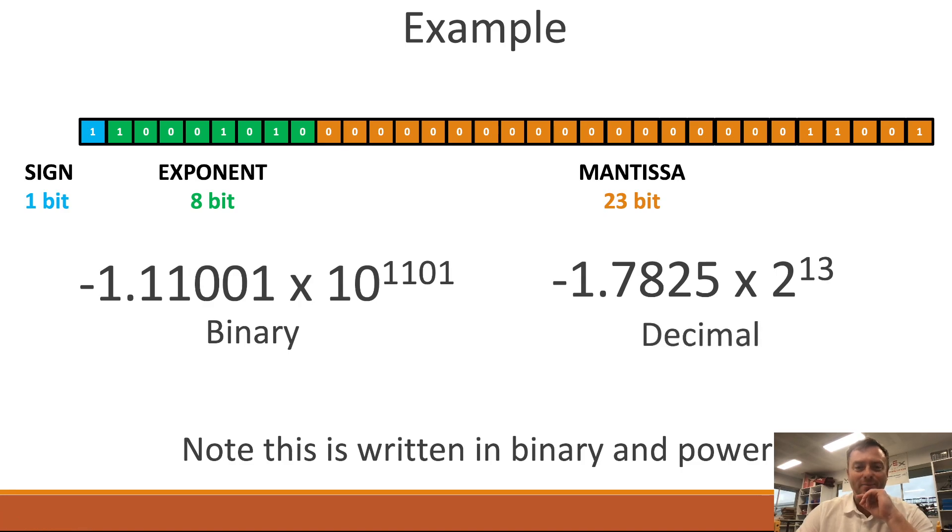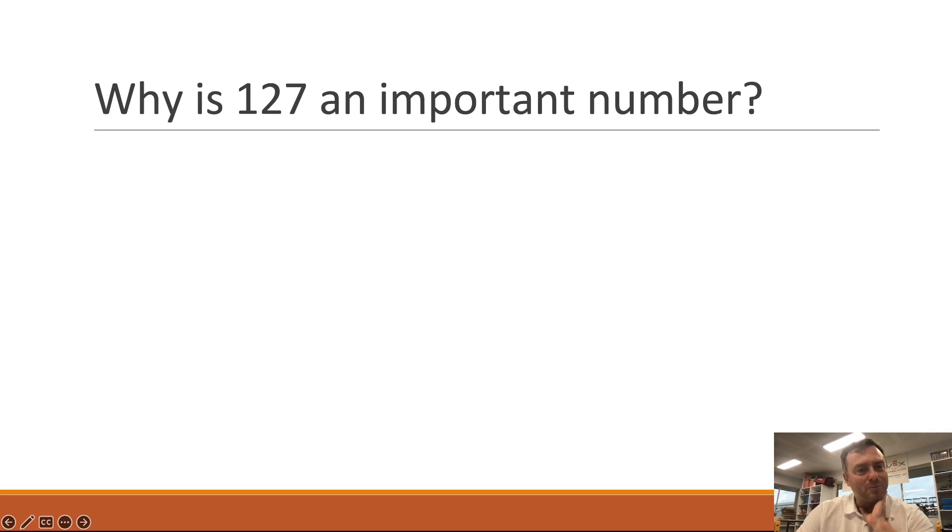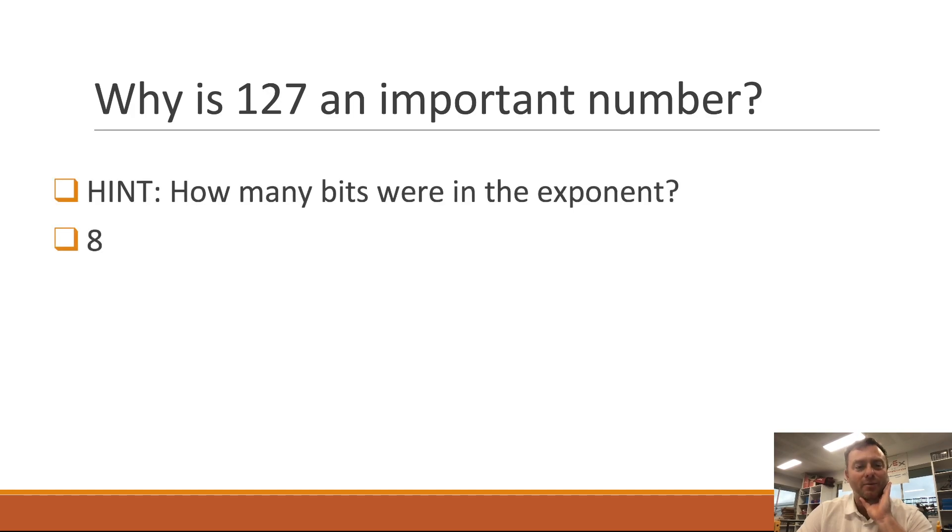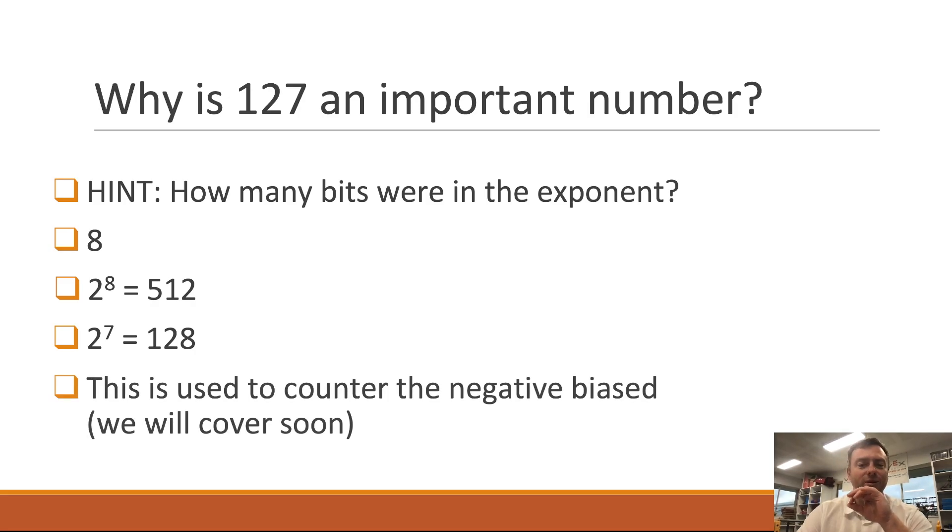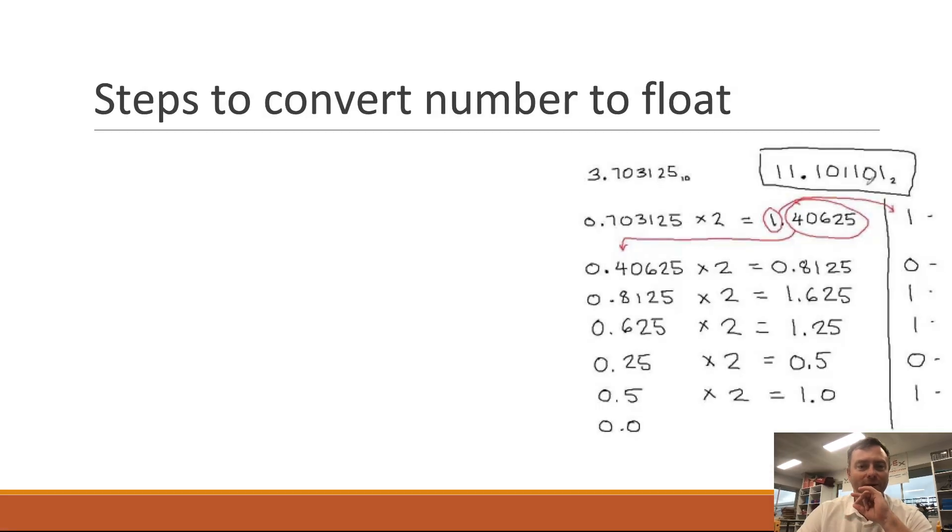So how do we unpackage that? Let's go through it. First of all let's play with the exponent. So why is 127 an important number when we're dealing with this? Well basically the exponent, we have 8 bits to play with which gives us 256. 2 to the power of 7 is 128, so we're going to use this as a thing called negative bias.